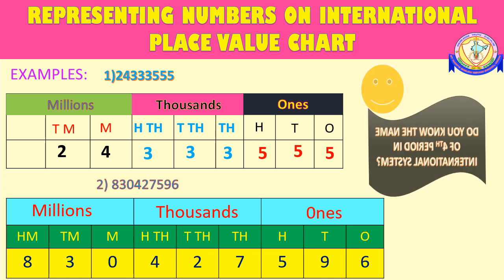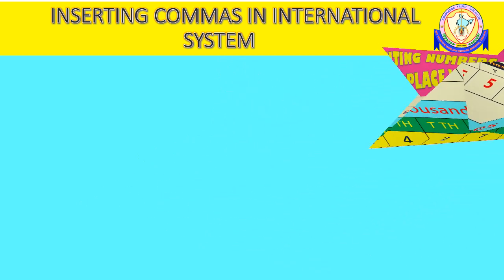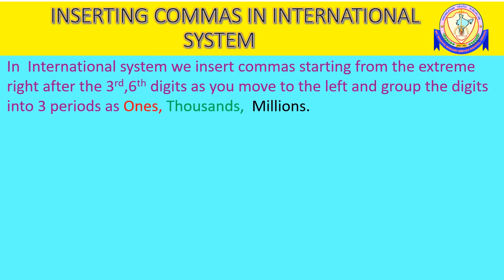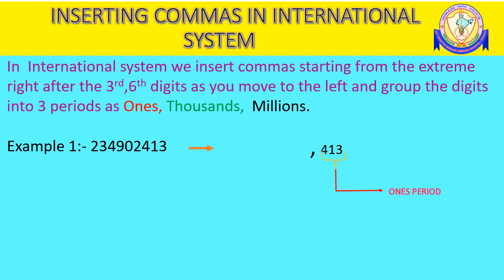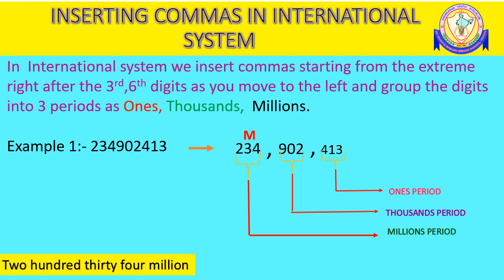Children, find out the name of the fourth period in the international system. Inserting commas helps in reading numbers easily. So, we insert commas from the extreme right after the third and sixth places. For example, the given number is a nine-digit number. The first comma is placed after the ones period. The second comma comes after the thousands period. The number is read as 234 million, 902 thousand, 413.